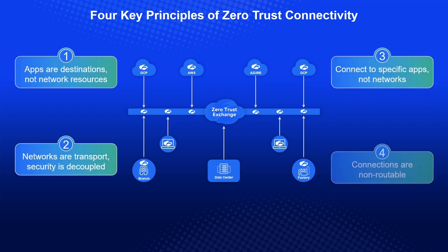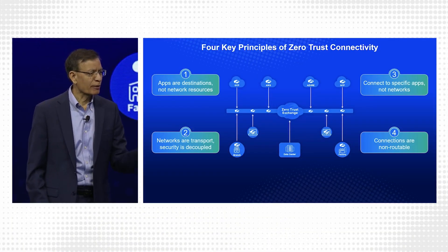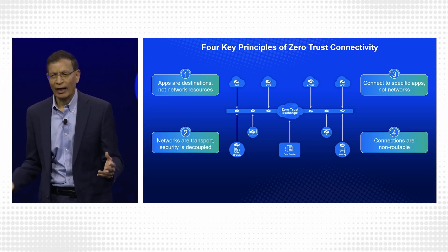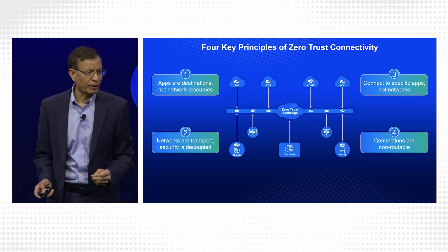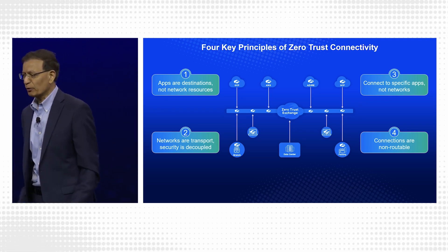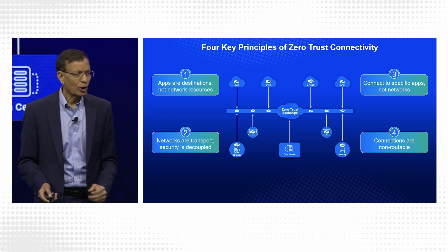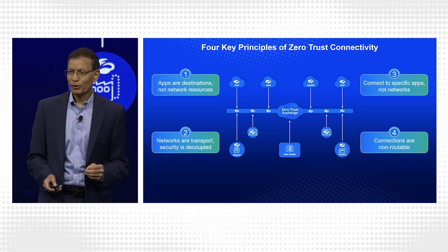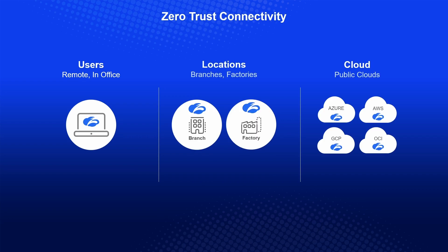There are four key things to think about in a zero trust architecture for networking. First, applications are merely destinations — there are no resources on the network, a network is simply a transport. Second, security is decoupled — you need to secure the right entity to right entity. Third, you connect to specific applications. Fourth, you don't need to worry about managing route tables. Think of 30,000 or 10,000 branches managing routes — what if those branches could be just like your home where you don't manage routes? That's the kind of stuff we're talking about, where your branch office becomes like Starbucks, ensuring connectivity for users across various locations and even cloud.